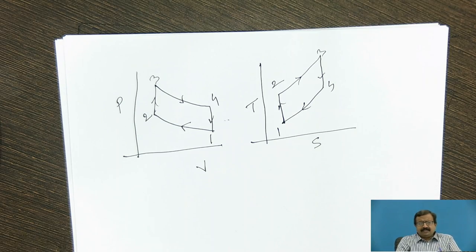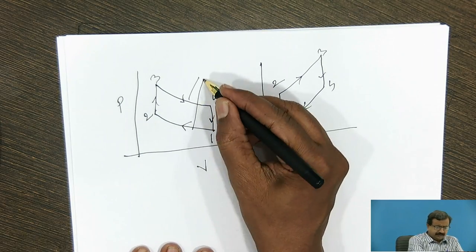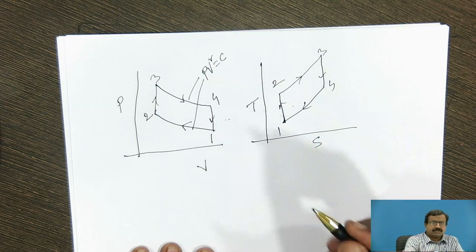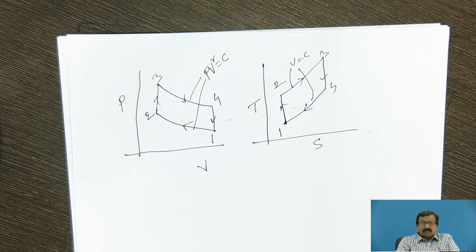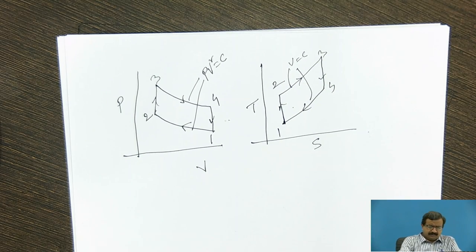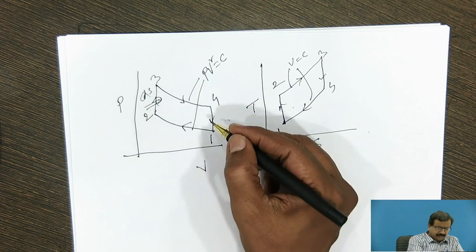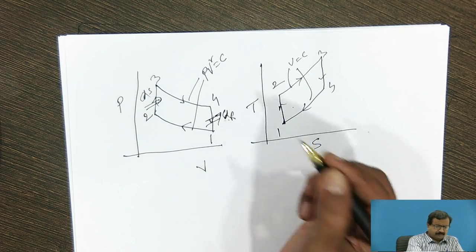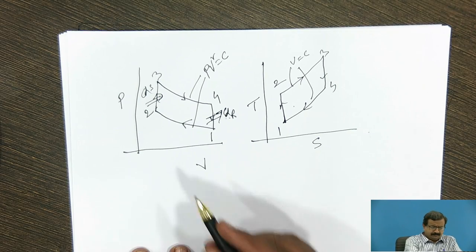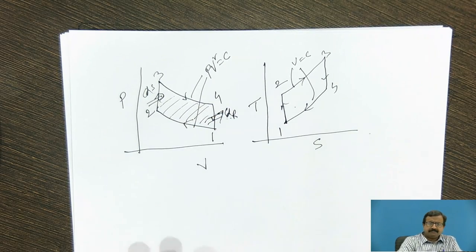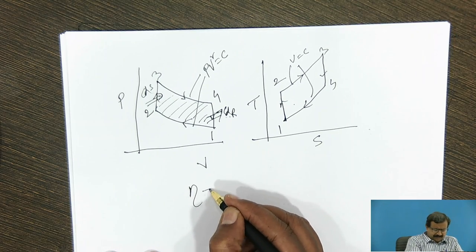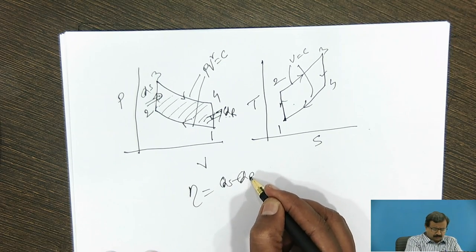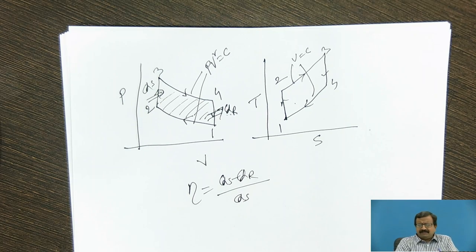Processes 1 to 2 and 3 to 4 follow PV raised to gamma equals constant (isentropic), while processes 2 to 3 and 4 to 1 are constant volume processes. The heat addition is QS and the heat rejection is QR. In the PV diagram, the enclosed area represents the work done, and efficiency equals work done divided by energy input, which is (QS minus QR) divided by QS.